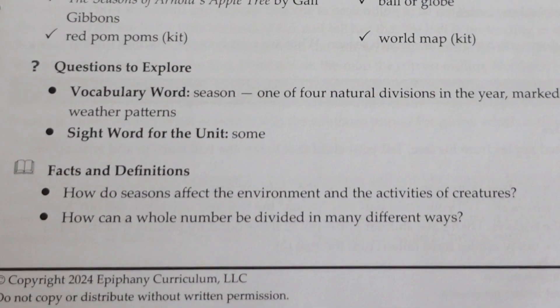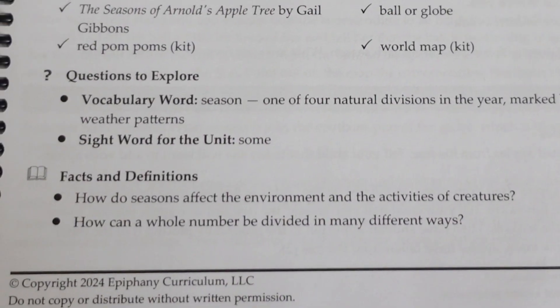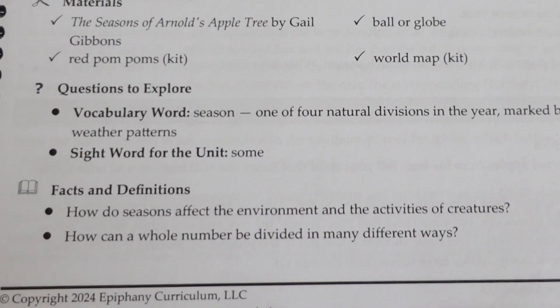Now we move into our vocabulary and sight words. Every unit has one vocabulary word and one sight word. By the end of that unit, your child should be expected to know that sight word and the definition of their vocabulary word. The vocabulary word for Unit 11 is 'season' and the sight word is 'sum' — both start with the letter S and will be represented in this unit multiple times.